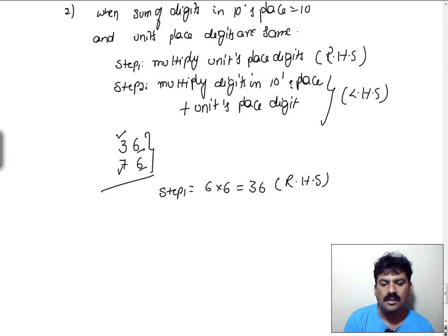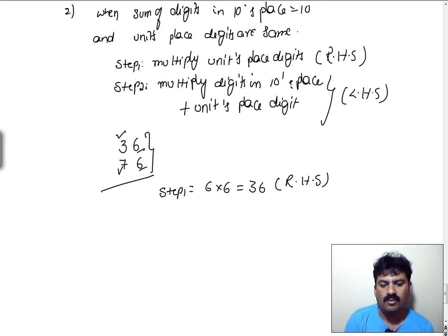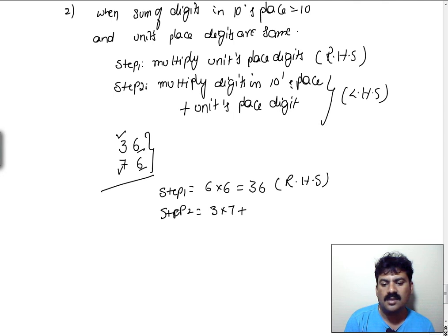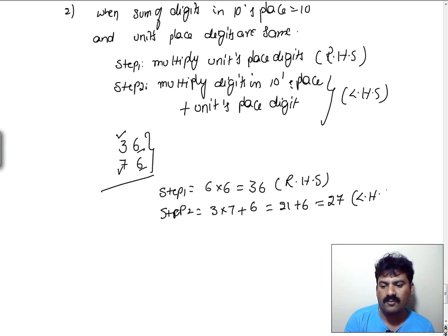Remember that the RHS part of the answer must be 2 digits. If only one digit is available, we need to append 0 at the left-hand side. In step 2: 3 into 7 plus the units place digit 6 — so 21 plus 6 equals 27 — which is the LHS part of the answer.